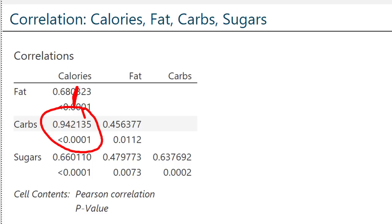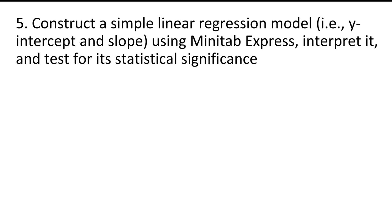This is a good time to take a break to review the first four learning objectives. In the fifth learning objective, we're going to shift from correlation to simple linear regression. Our fifth learning objective is to construct a simple linear regression model — compute the y-intercept and slope — using Minitab Express, interpret it, and test for its statistical significance. We'll start with a review and then go back to Minitab Express to run through an example.